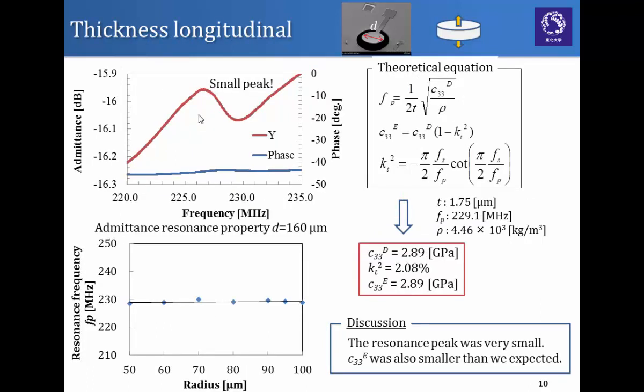And this is the result of the thickness longitudinal mode. This is the typical admittance resonance properties and this is the tendency of the resonance frequency by changing its radius. From this, we measured c33e and Kt squared. For discussion, the measured resonance peak was very small and also this c33e value was also smaller than we expected.